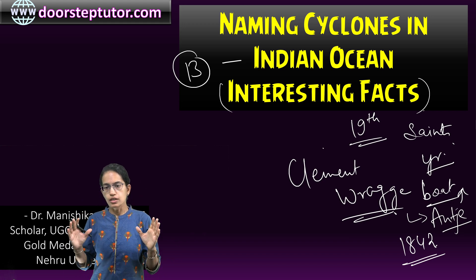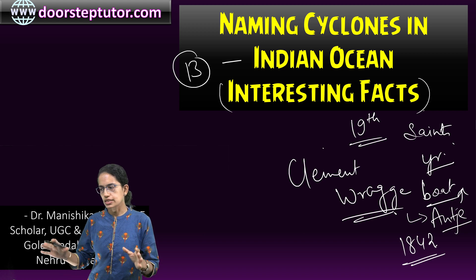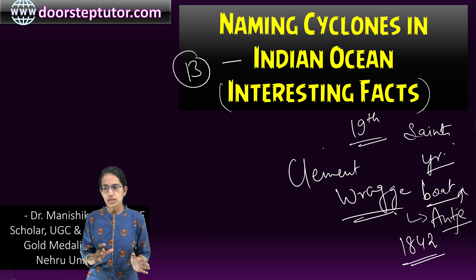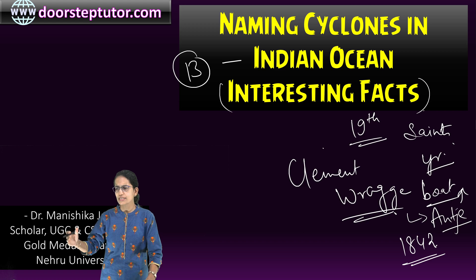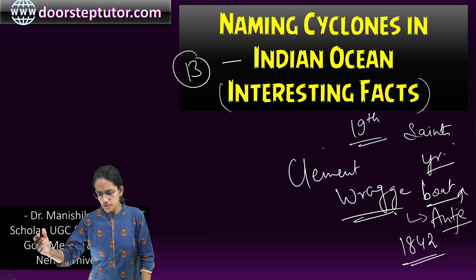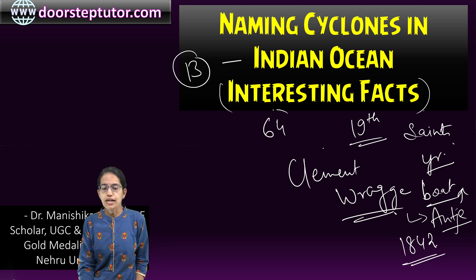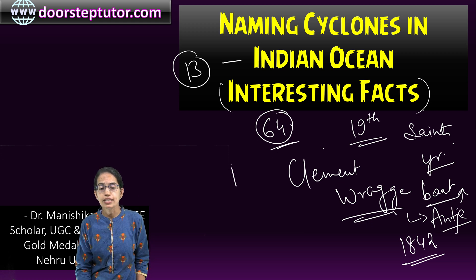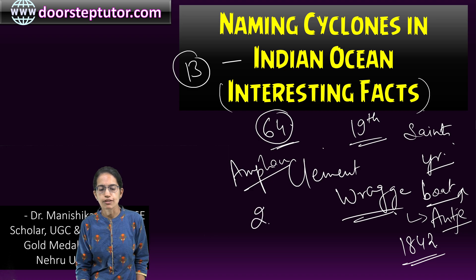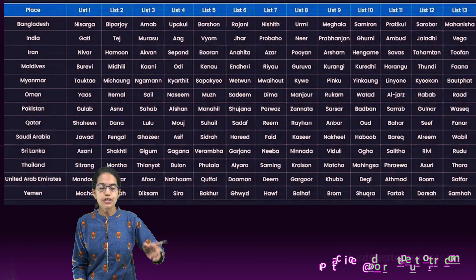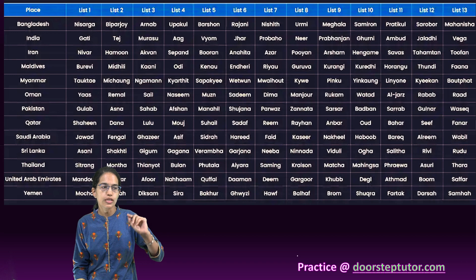In 2000, the World Meteorological Organization started assigning names to cyclones in the Indian Ocean, with the list suggested by a few of the nations. The first list had 64 names, and this list ended with Amphan as the last in the series in 2020. Post-2020, a new list was introduced.